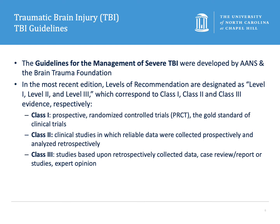As mentioned in the first lecture, there's a set of guidelines developed by the AANS for managing trauma patients because it can be quite complicated. To understand these guidelines you have to understand the levels of recommendation and evidence. Class one evidence is from prospective randomized controlled trials — the gold standard. Class two evidence is from clinical studies with reliable data prospectively collected but analyzed retrospectively. Class three studies are based on retrospectively collected data, case reviews and reports, and expert opinions. This classified data gets translated into levels of recommendation for the guidelines.